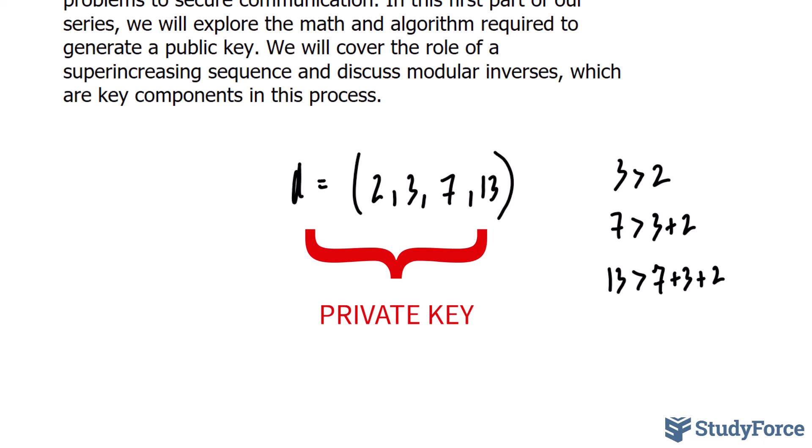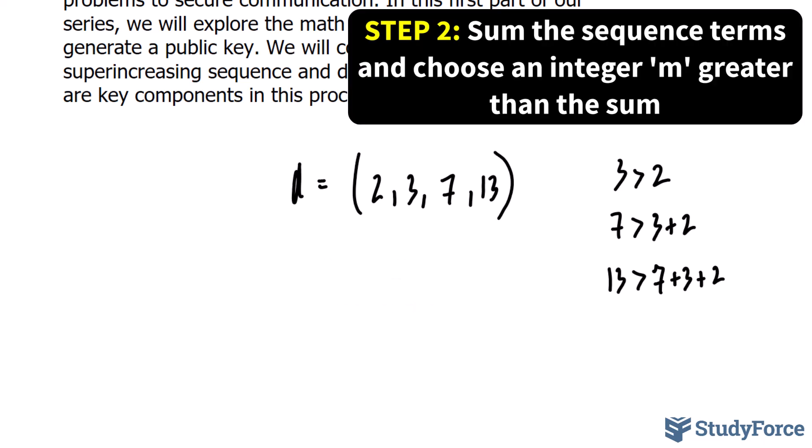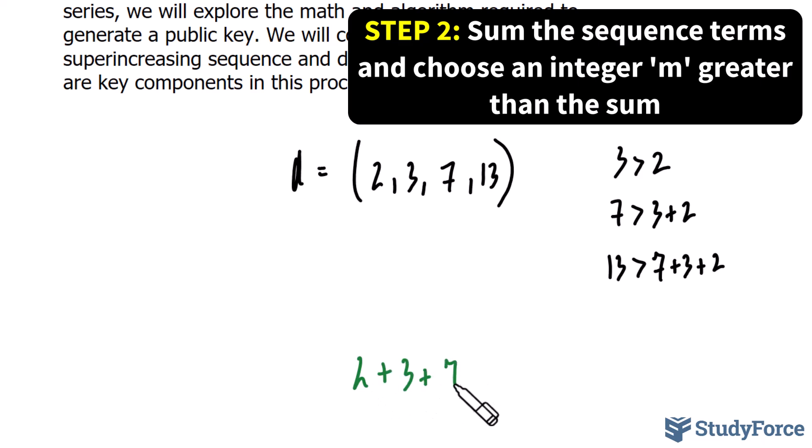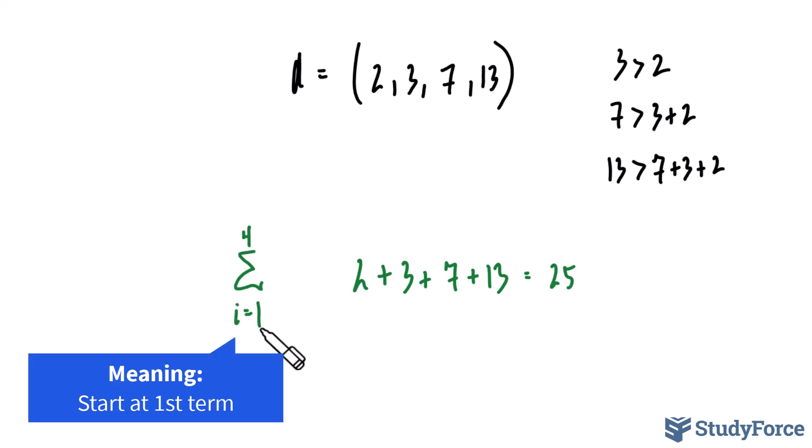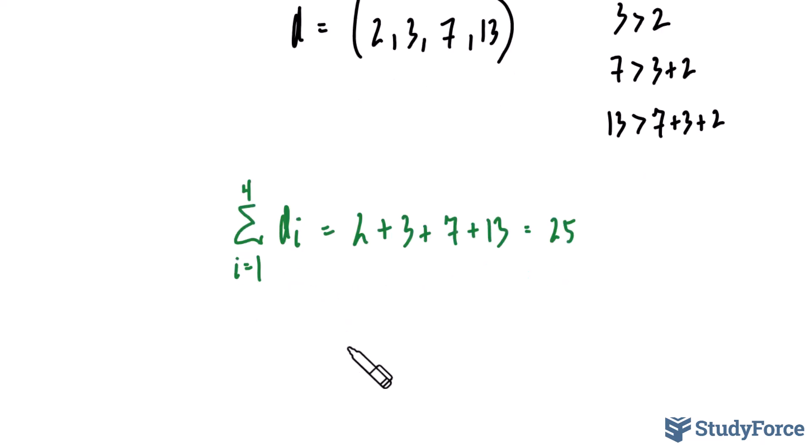Now that we have our super-increasing sequence, the next step is to sum up the terms in the sequence. 2 plus 3 plus 7 plus 13 make a sum of 25. Mathematically, this is written like this, where we have the symbol for sum, and given that we have 4 terms, we write down 4 up here, and underneath we write down i is equal to 1 for the sequence d sub i. Once the sum has been found, we then choose an integer that's greater than that sum. We'll call that integer m. So m must be greater than what we just found, and it can be anything, just as long as it's an integer. Let's say that m is 29.